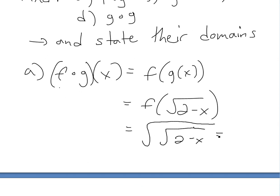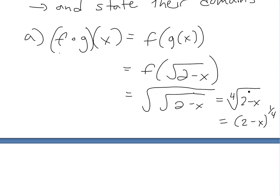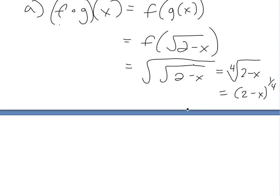So we're going to have a square root of a square root of 2 minus x. You can simplify this — because this is the power of 1 over 2 — into the fourth root of 2 minus x, which equals (2 minus x) to the 1 over 4. So this is our function.